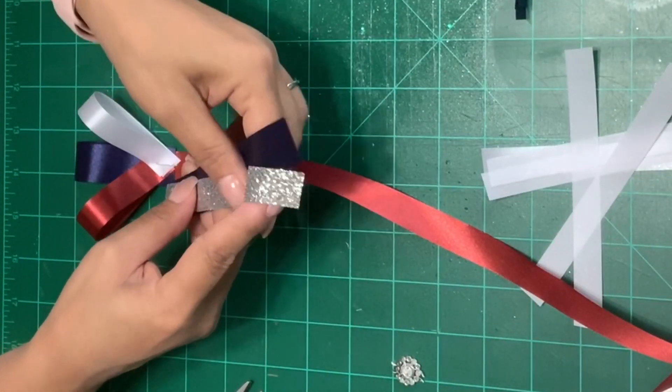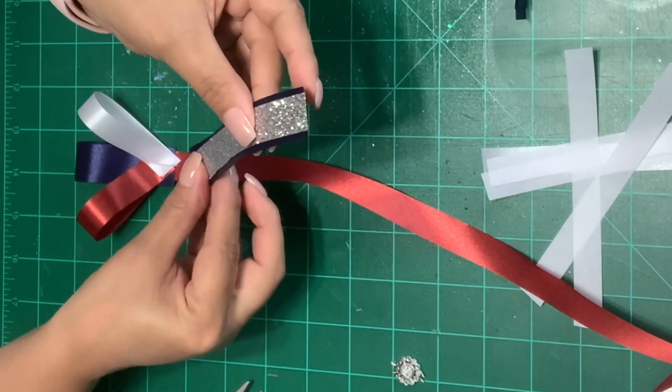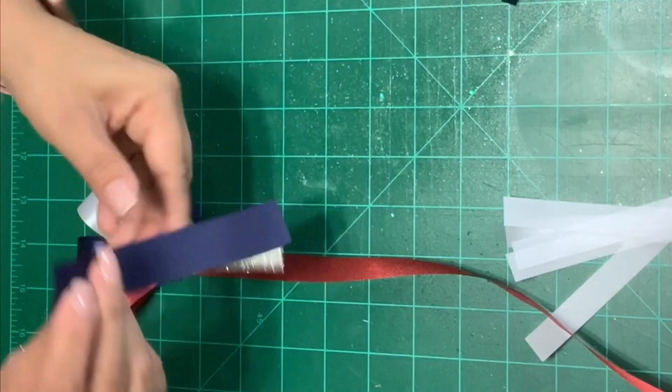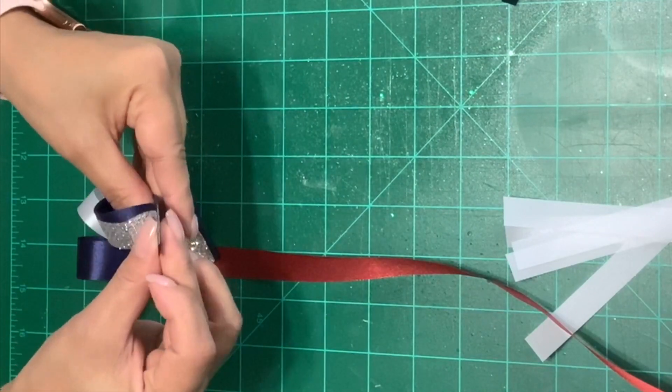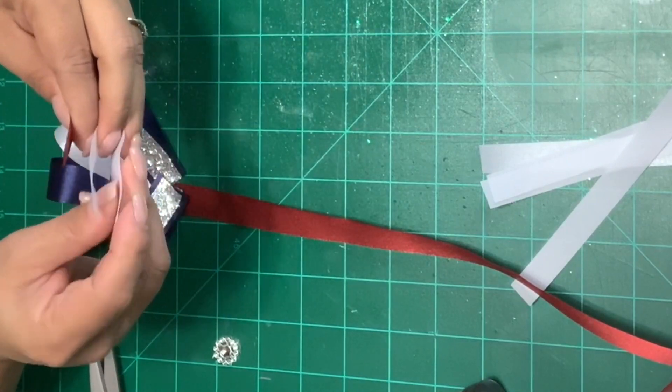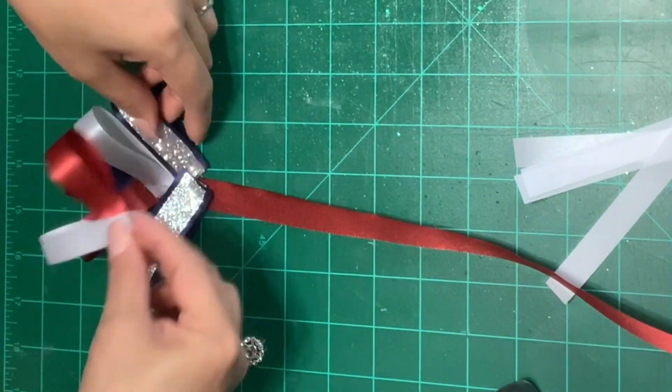Now I'm going to take a blue ribbon and a silver ribbon that's a little bit smaller and I'm going to overlap them and make a loop. Let's make a second blue and silver loop.